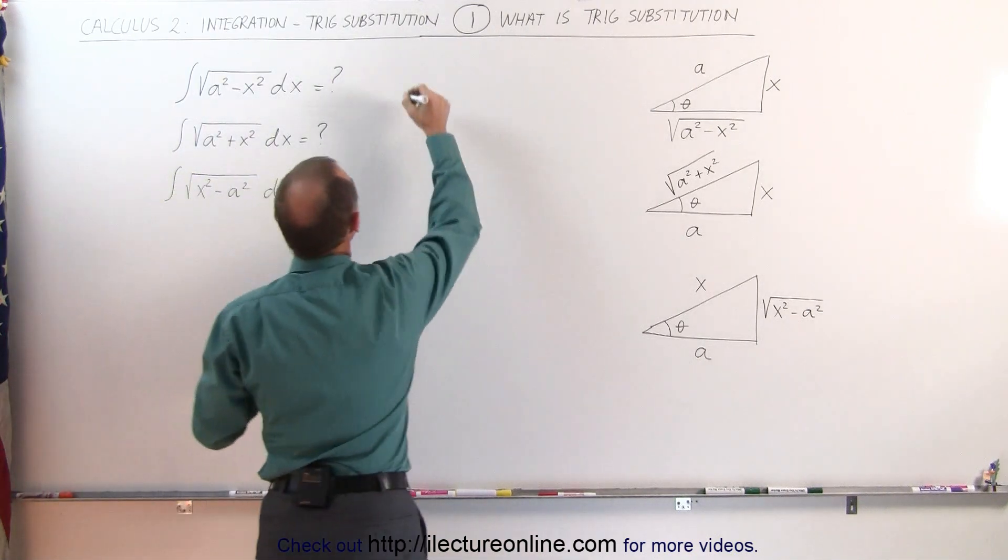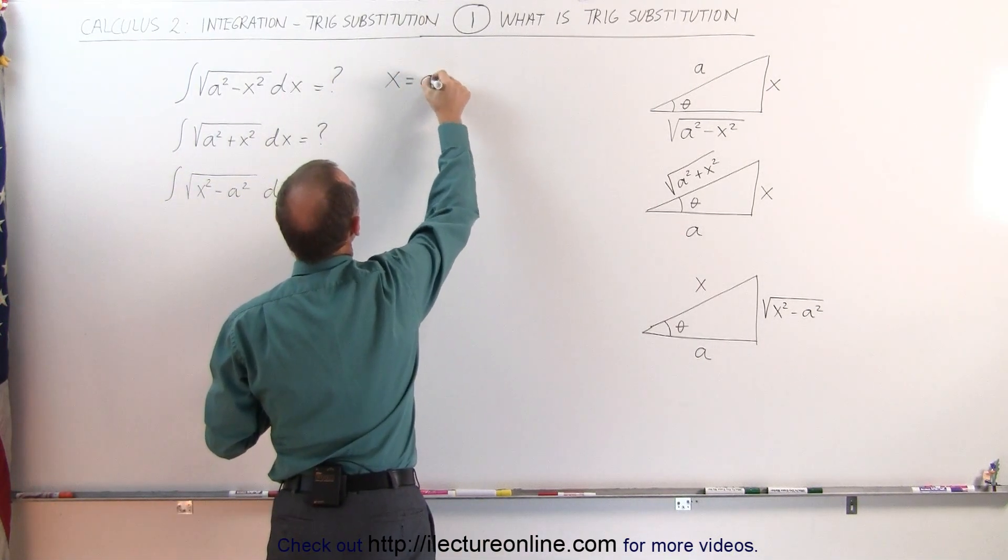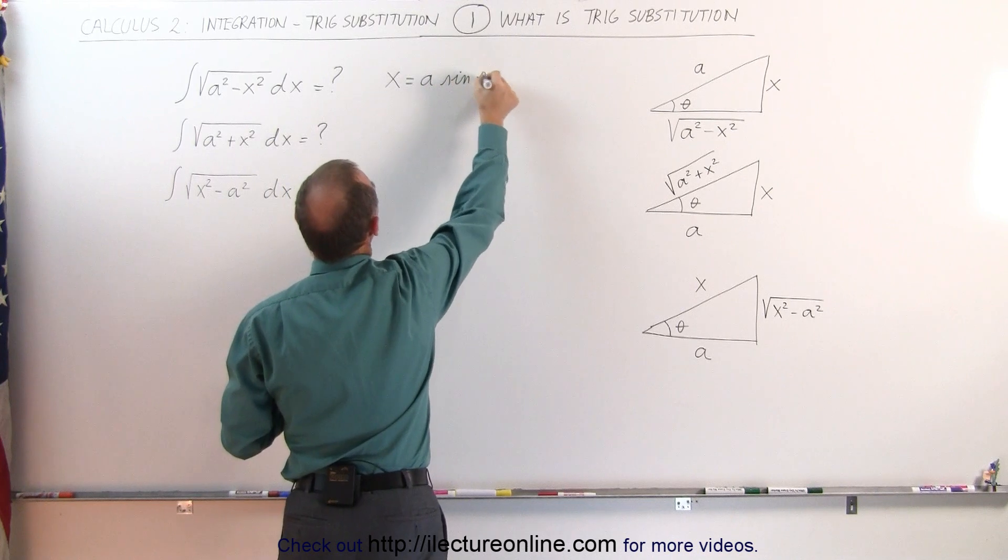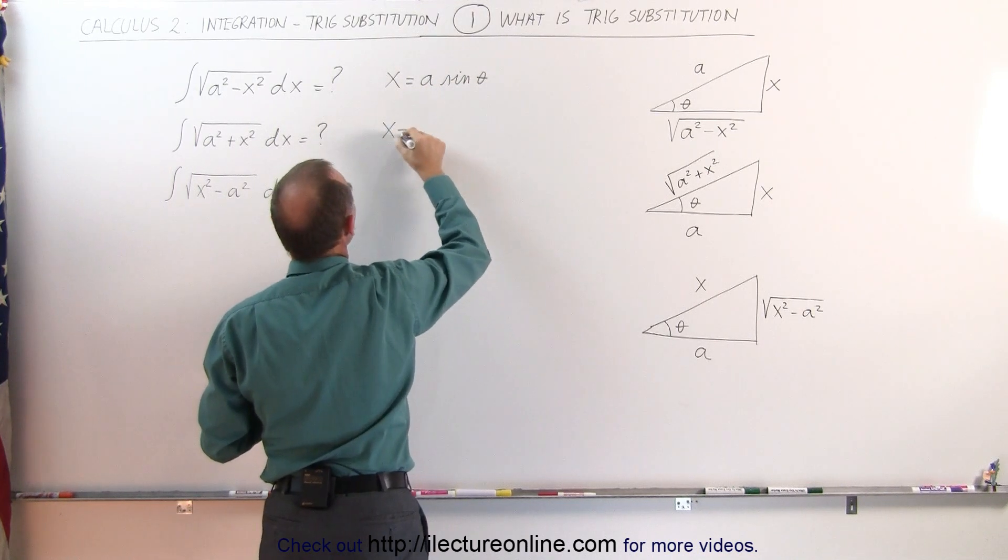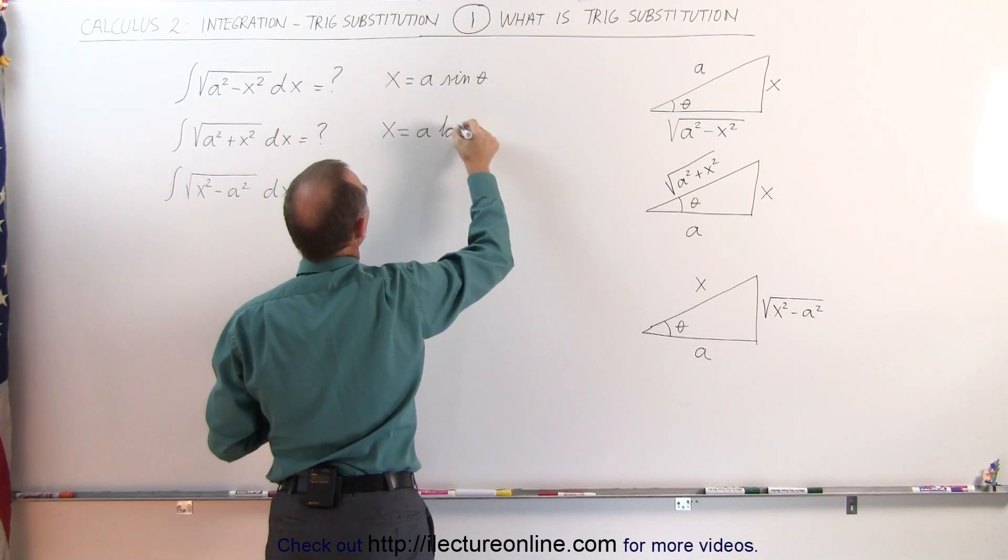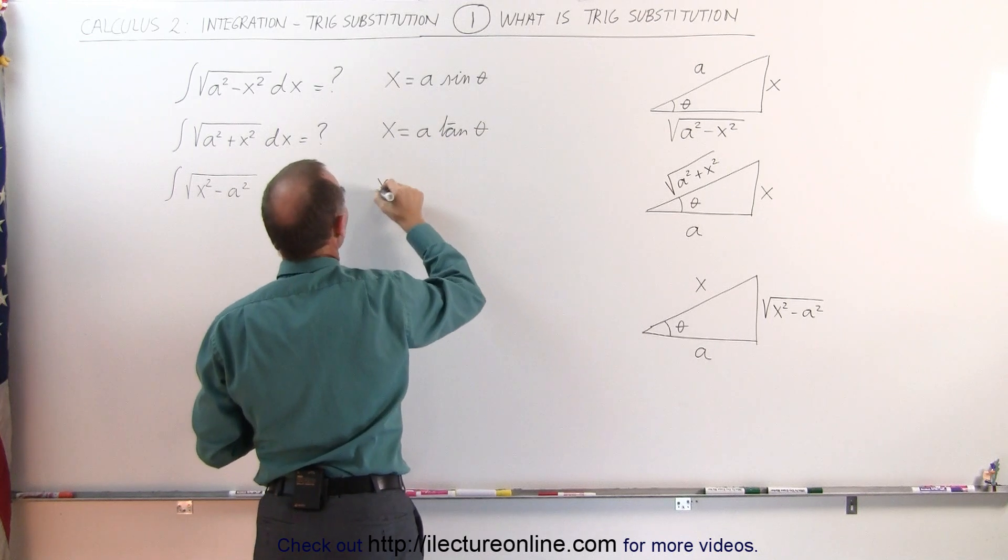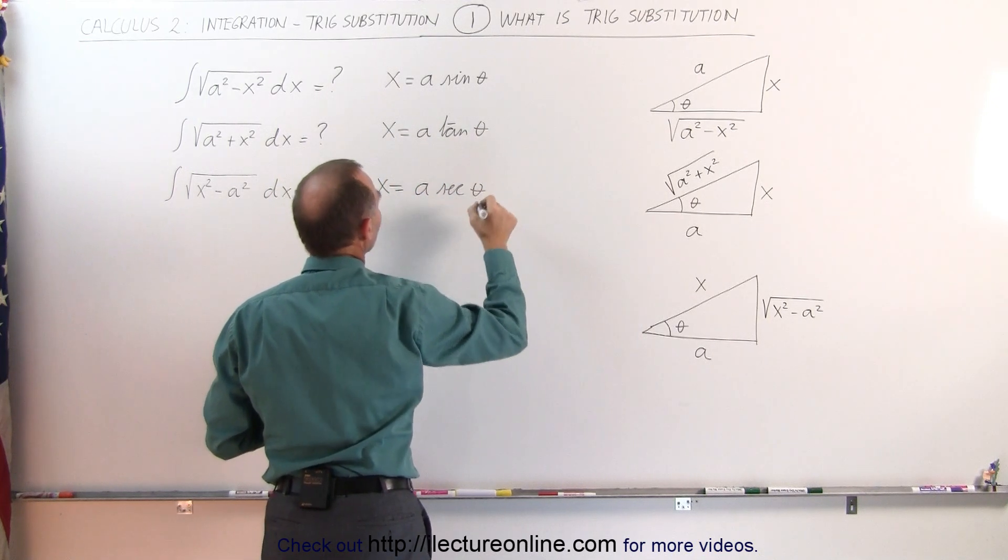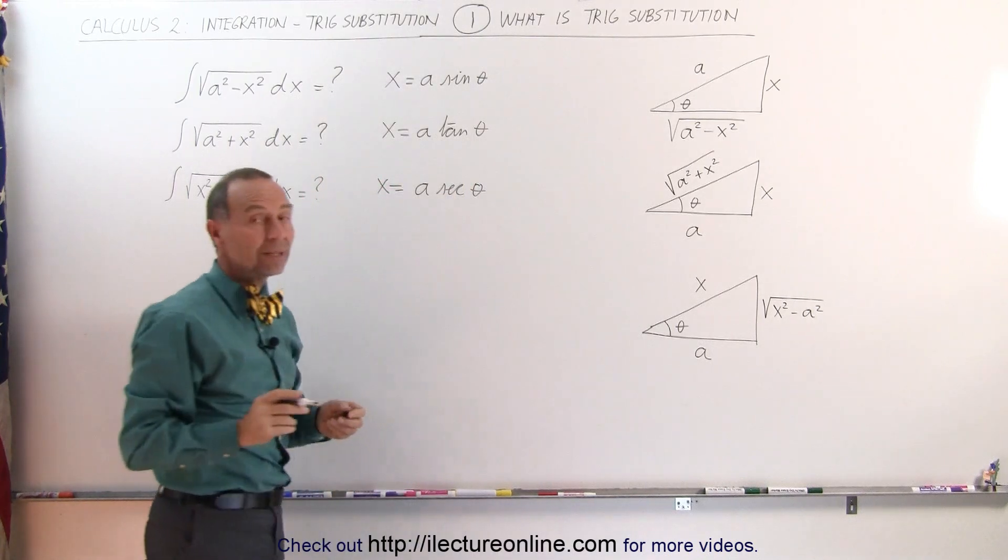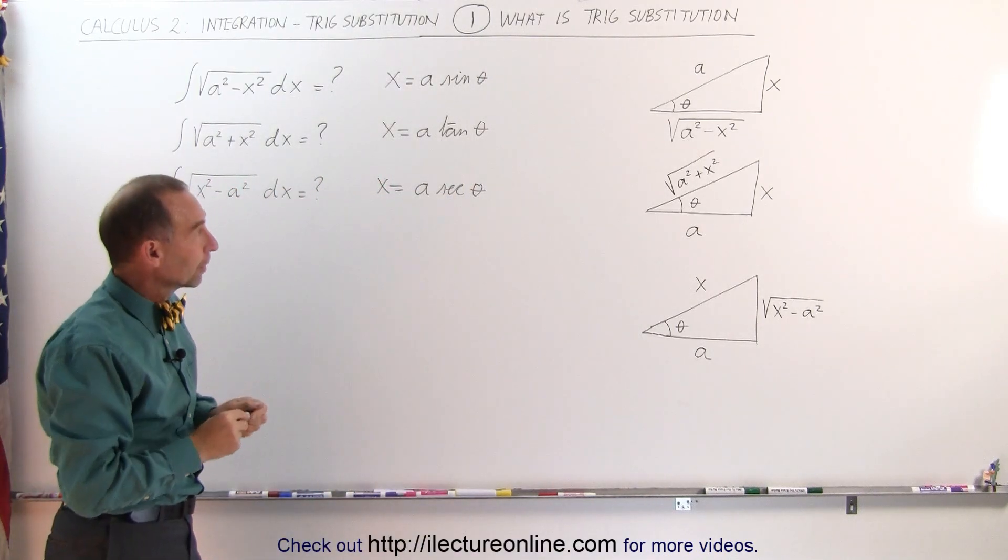In the first case we let x equal a times the sine of theta, in the second case we'll let x equal a times the tangent of theta, and in the third case we'll let x equal a times the secant of theta. Why do we do that? Well that's what these triangles are for. Take a look.